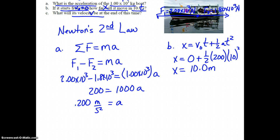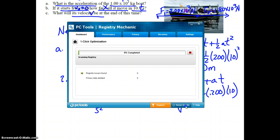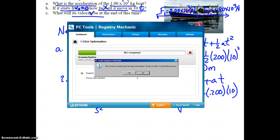So, C wants to know what will its velocity be at the end of this time. That sounds like a V equals V0 plus AT. V equals 0 plus 0.2 times 10. Final velocity, 10 times 0.2, 2.0 meters per second.